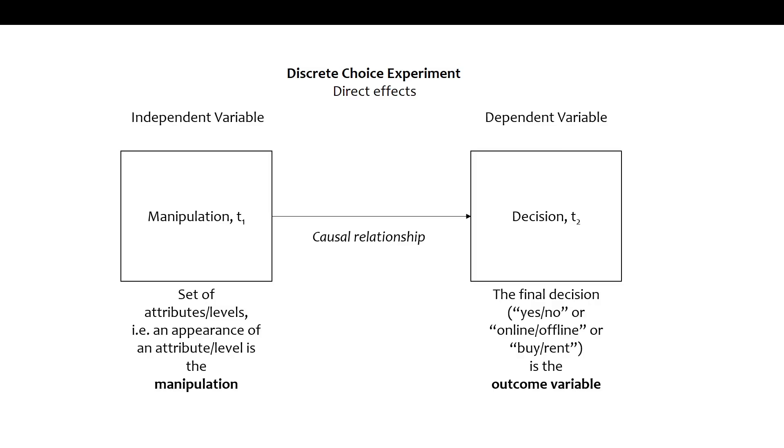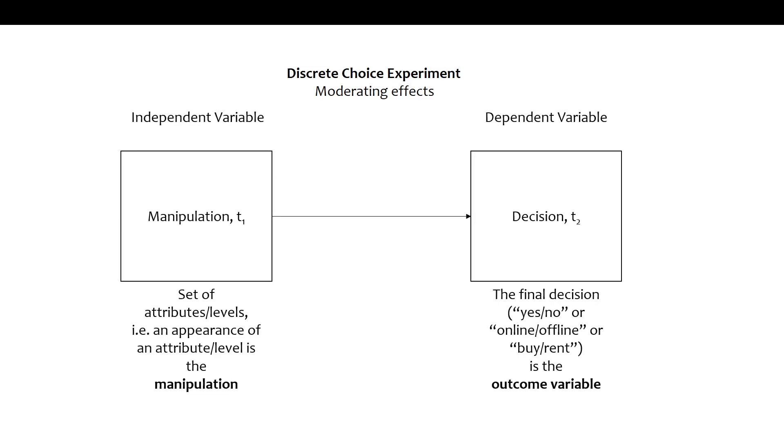Discrete choice experiments allow you to test not just correlation but causal relationships — you know that one thing has impact on the other, not merely that items co-appear. You can also measure moderating effects: those which show the conditions under which the direct effect appears, or under which it is stronger or weaker. Whenever you ask under which condition a relationship holds or is strong or weak, you're talking about moderation.